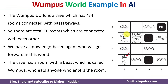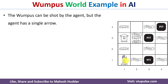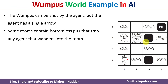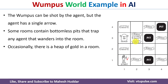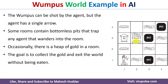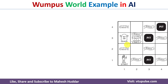In this cave there is a room where the beast is present, known as the Wumpus. Whenever someone enters this room, the Wumpus will eat that person. The agent has a single arrow; with this arrow the agent can kill or shoot the Wumpus. There are also some rooms where bottomless pits exist — whenever the agent falls into a pit, the agent will die. Occasionally there are rooms where gold is present. The goal of the game is to collect the gold and exit the world without being eaten by the Wumpus.